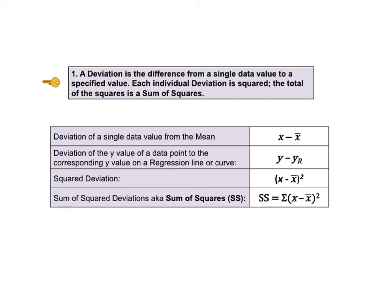Key to Understanding number 1 tells us that a deviation is the difference from a single data value to a specified value. Each individual deviation is squared, and the total of the squares is the sum of squares. Here are some examples. Commonly a deviation is the difference from a single data value, X, to the mean, X bar. In regression with XY pairs of data, for a given value of X in the data, we calculate the difference between its value for Y and the value of Y on the regression line or curve for that value of X. A squared deviation for a single data value of X would be the quantity X minus X bar squared. For the regression value of Y, it would be the quantity Y minus Y sub R squared. And if we add up all the squared deviations of a given type, we get a sum of squared deviations, also known as a sum of squares.